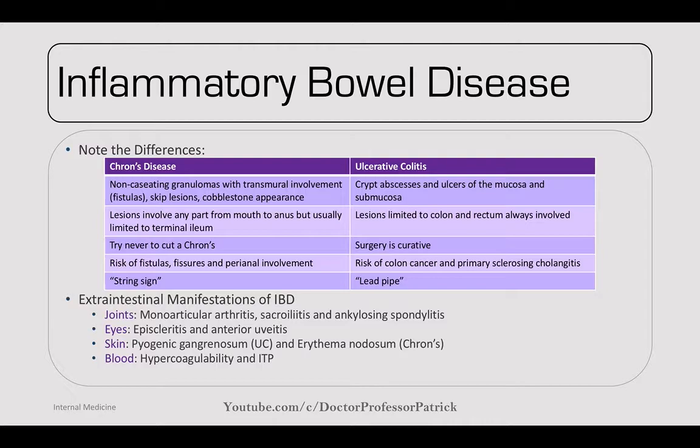Never do surgery on a Crohn's patient if possible — high risk of fistula formation and poor wound healing. Surgery can be curative for UC, especially given the risk of colon cancer and primary sclerosing cholangitis. Crohn's has increased risk of fistulas, fissures, and perianal involvement. Classic imaging: string sign on barium enema for Crohn's; lead pipe sign (loss of haustra) for UC.